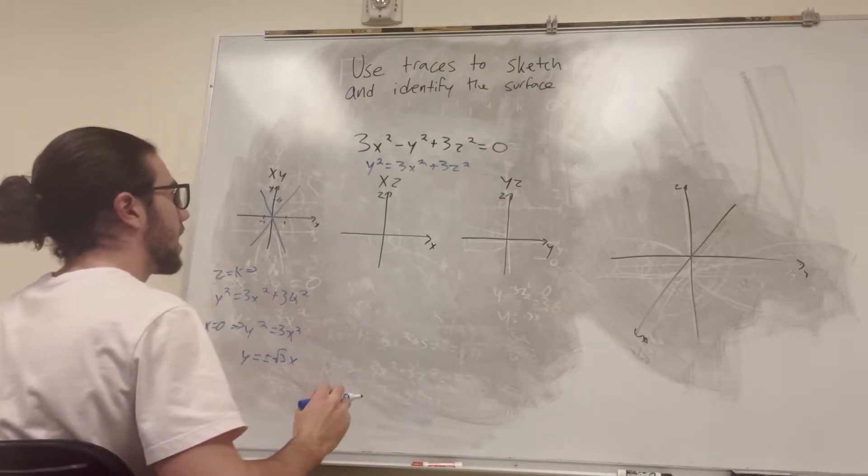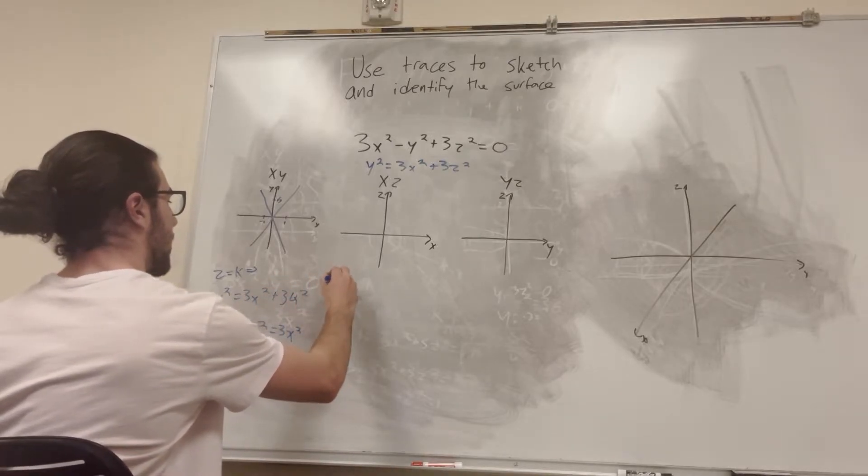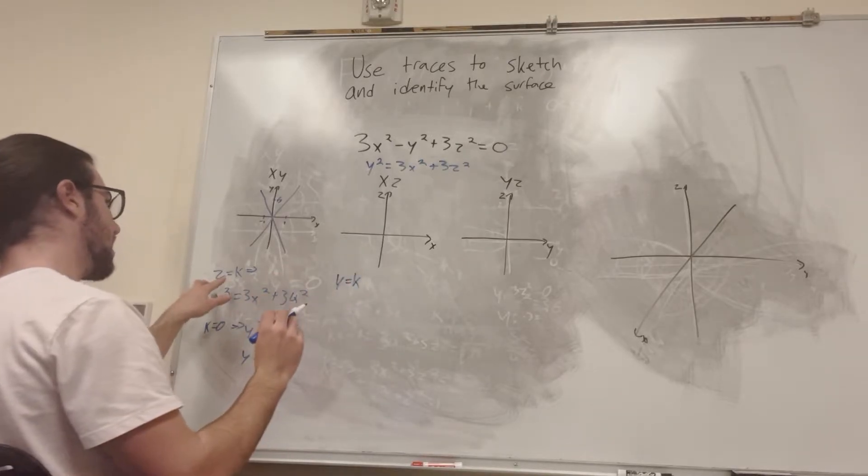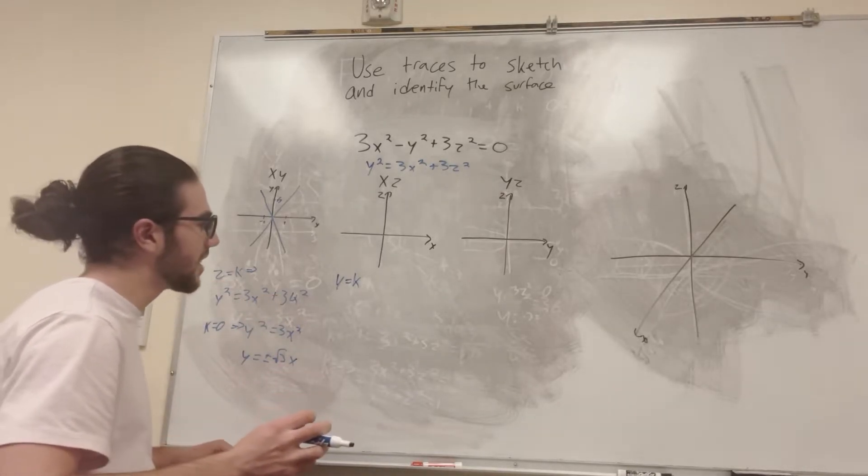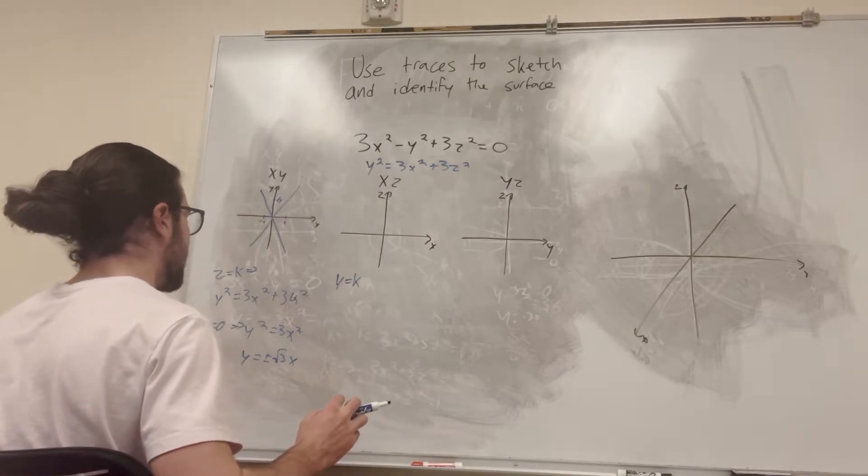Now, x to z plane, we have. So let's say that y is equal to a constant. So over here, we saw that z is equal to a constant, and it ended up not being that necessary. What you can do is you can mess with it a little bit, and you can see what else it looks like in different values.